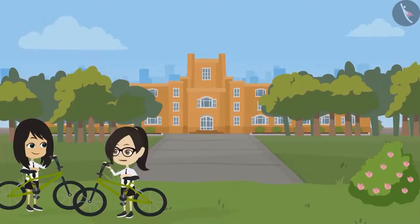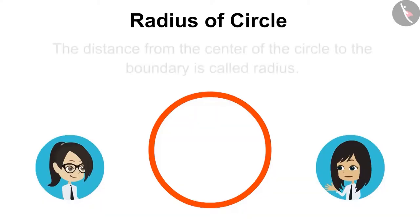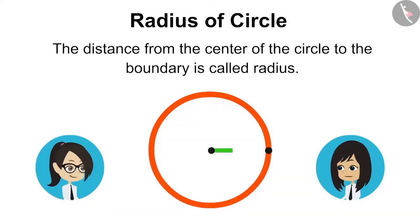Now remains the radius. You tell me about it. The distance from the center of the circle to the boundary is called radius.